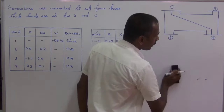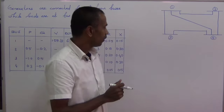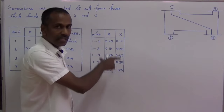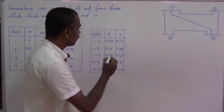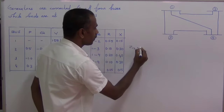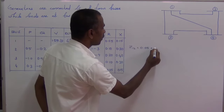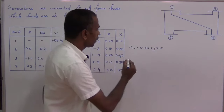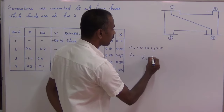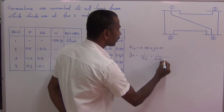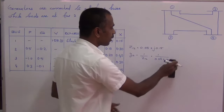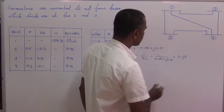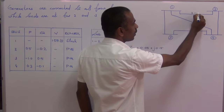First of all, let us find out the bus admittance matrix of this four-bus power system. For that, let us find out the line impedances and then we can find out the line admittances. The line impedance Z12 equals 0.05 plus J0.15 — these values are in per unit. So Y12 equals 1 by Z12, which equals 1 by (0.05 plus J0.15), and this is equal to 2 minus J6. This is the line admittance.